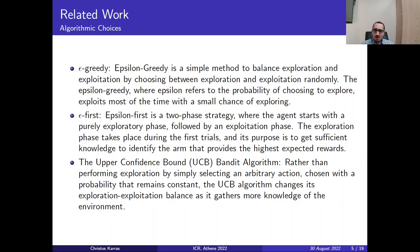The choices are many however we focus on these three. We have the ε-greedy or epsilon greedy which is a simple method that balances exploration and exploitation by choosing between exploration and exploitation randomly. The epsilon refers to the probability of choosing to explore or exploit most of the time with a small chance of exploring. We have the ε-first or epsilon first which is a two phase strategy where the agent starts with a purely exploratory phase and then the exploitation phase follows up.